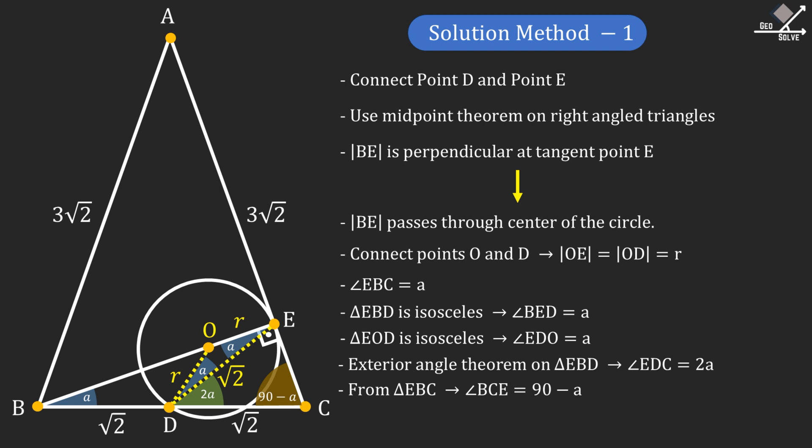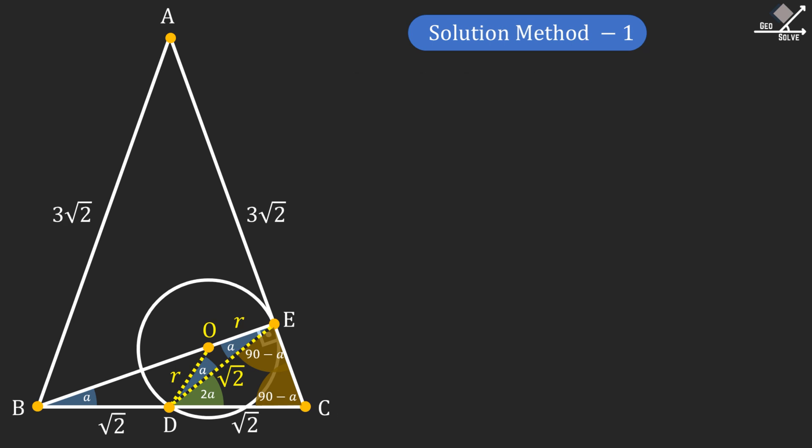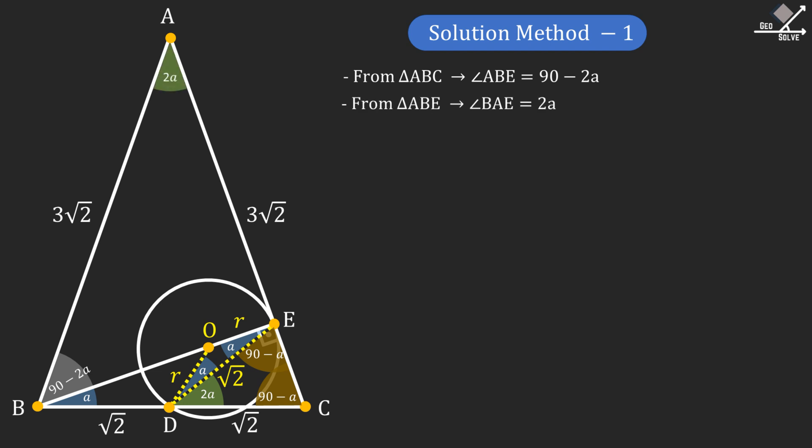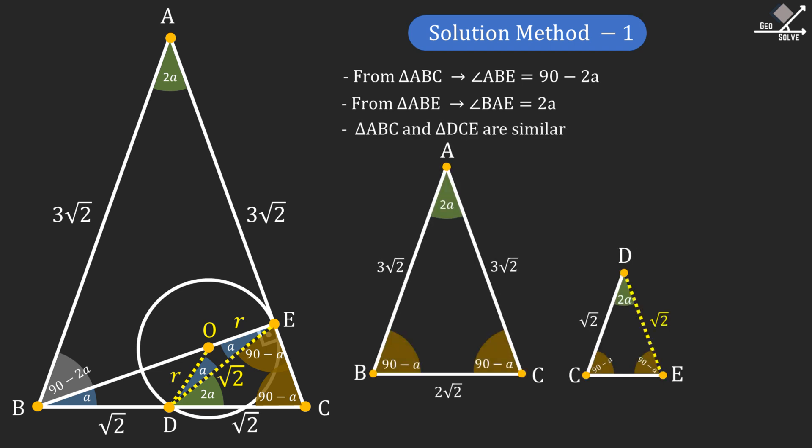And from angle BEC, we can see that angle DEC is also 90 minus A. Since triangle ABC is an isosceles triangle, base angles must be equal, and that makes angle ABE equal to 90 minus 2A. From triangle ABE, we can see that angle BAE will become 2A.